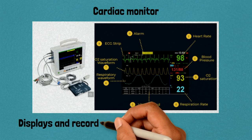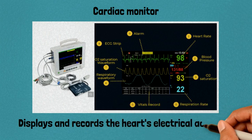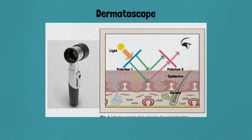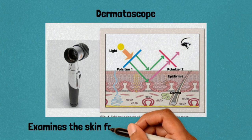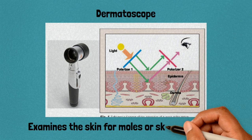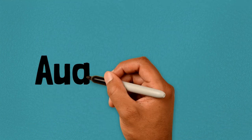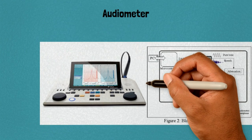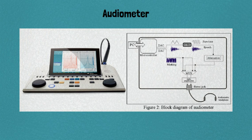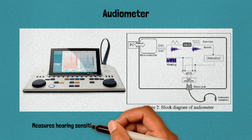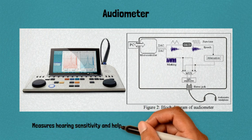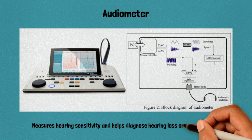37. Anesthesia machine: used to administer and monitor anesthesia levels during surgeries or medical procedures. 38. Cardiac monitor: displays and records the heart's electrical activity. 39. Dermatoscope: a handheld device used to examine skin lesions or moles for early detection of skin cancer.